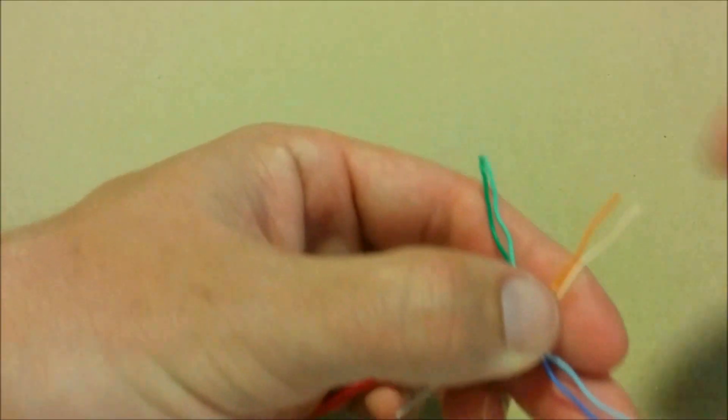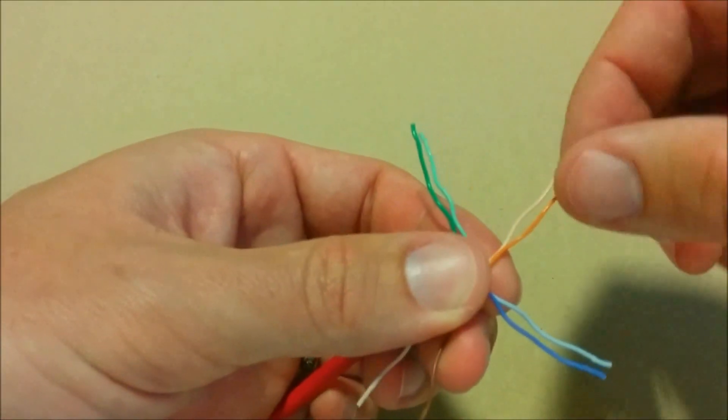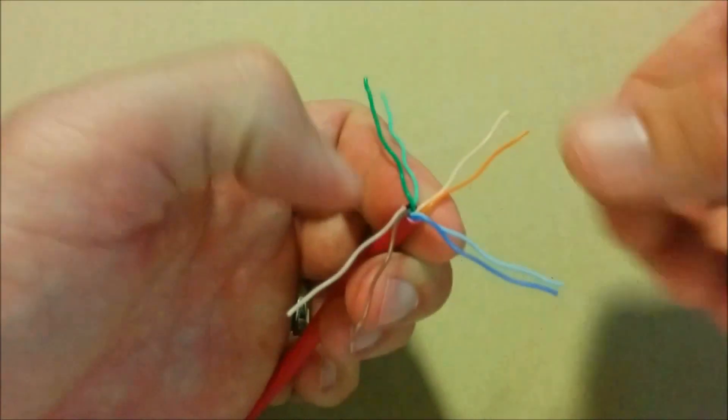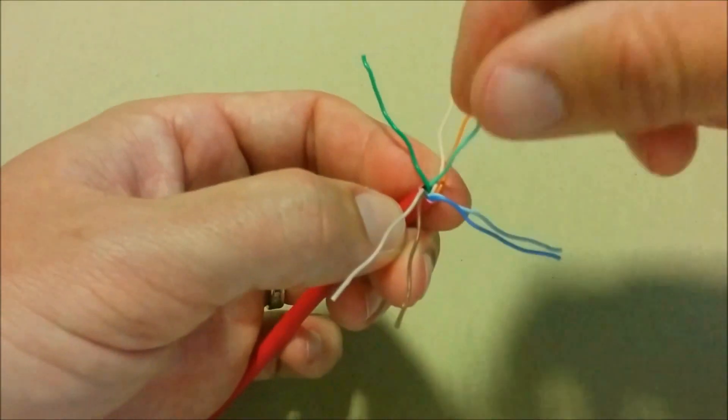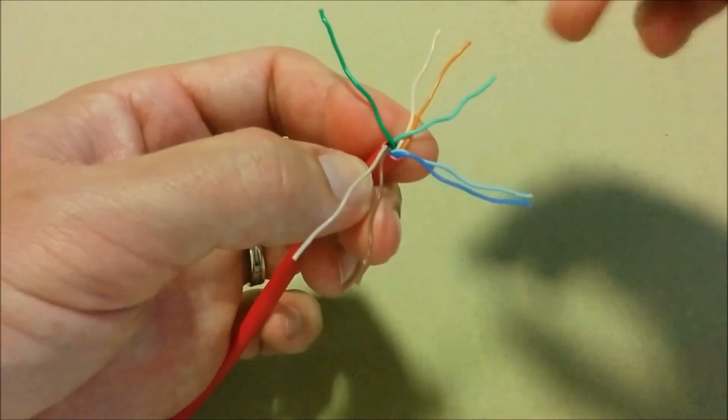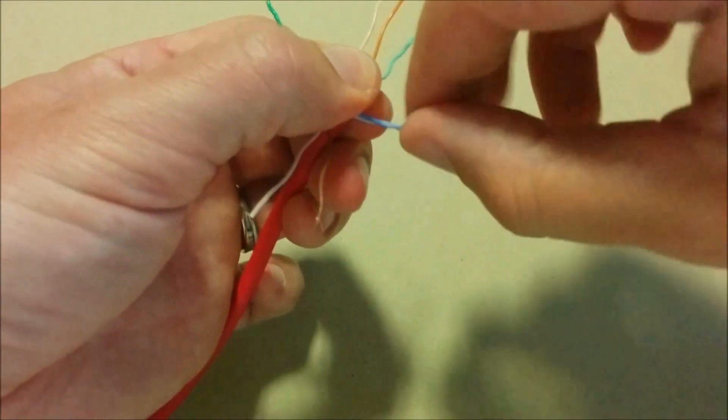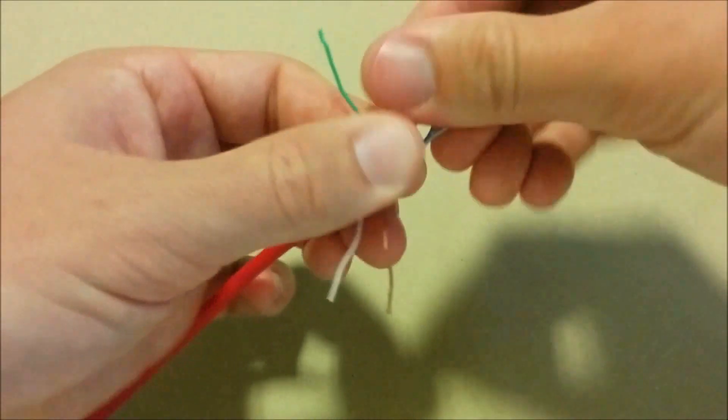As you can see, I'm making a straight through here, so it's white orange, orange, white green, and blue, white blue, green, and white brown and brown.